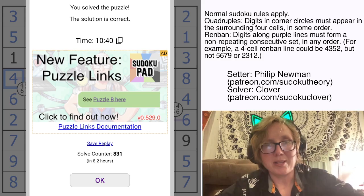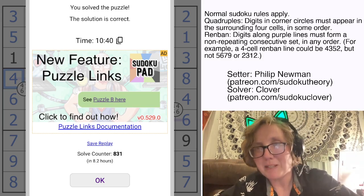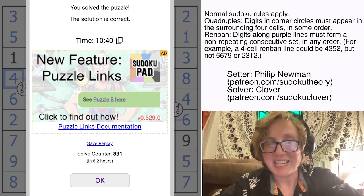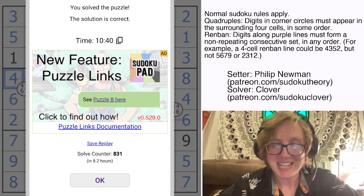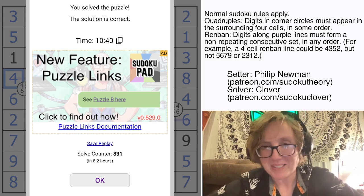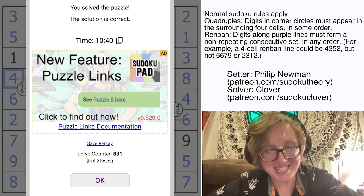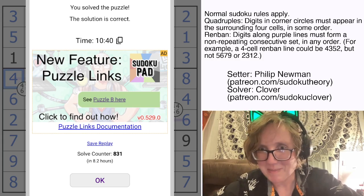And that is how you solve Trips and Quads by Philip Newman. Philip, a little bit of love in the comments. He's had a hand injury, a furniture-assembly-related hand injury, and is struggling a little bit speed-solving on camera. So, send him a little bit of extra love in the comments if you don't mind.